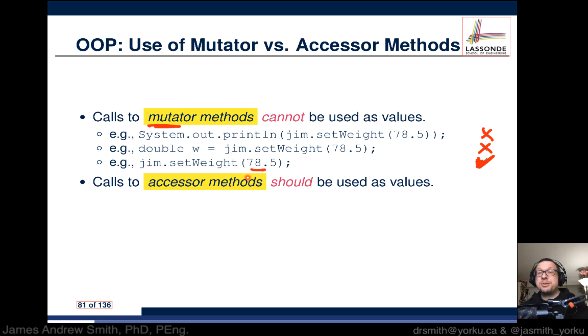Next, calls to accessor methods should be used as values. For instance, if I go jim.getBMI and I'm not assigning it to a variable, that doesn't work. System.out.println(jim.getBMI) - I'm going to get some value and I'm putting it as an input parameter for my println. That should work, and it does.